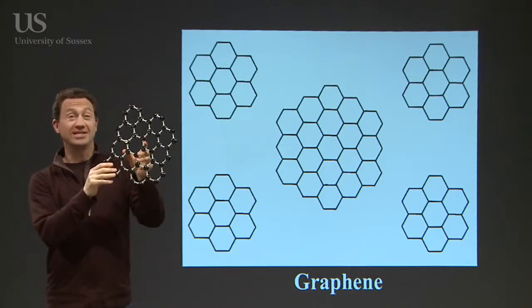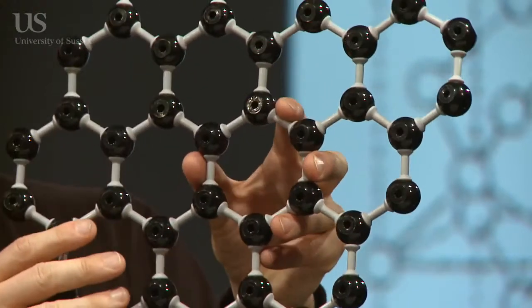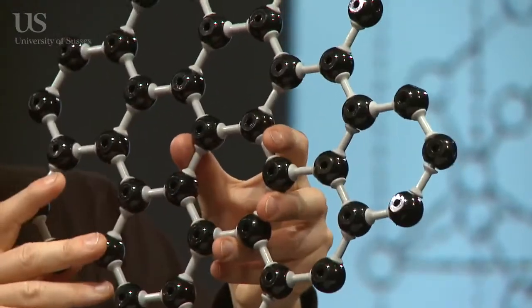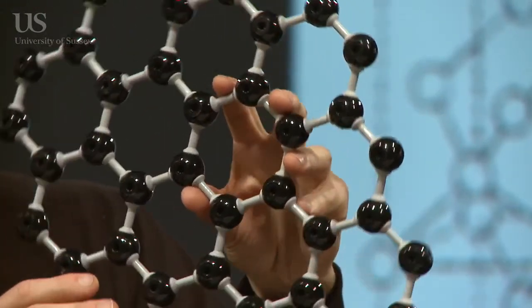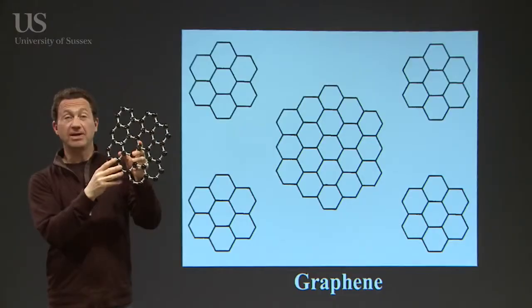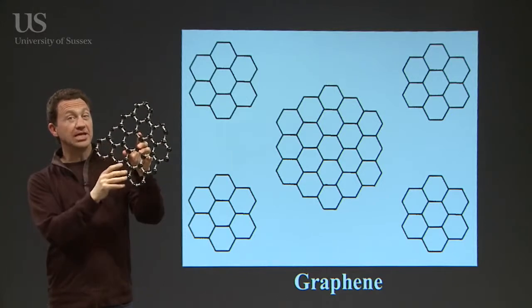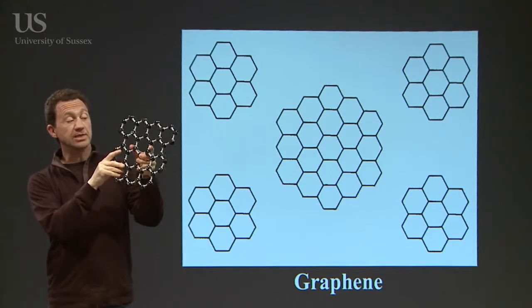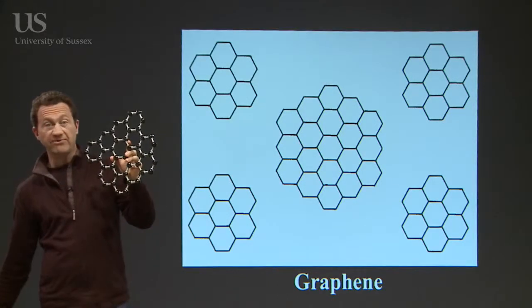So this is a model of graphene, a single sheet of graphite. It has some absolutely amazing properties, even though it's a sheet of what we would normally think is common graphite, the stuff in our pencils. A single sheet has some very interesting properties. So let me show you a bit more about graphene.